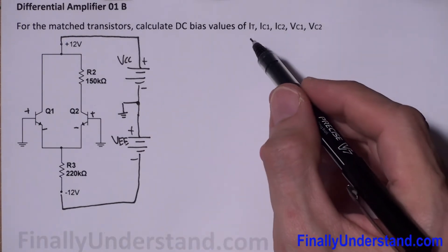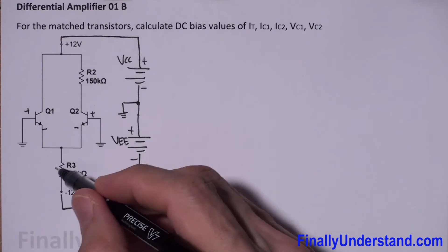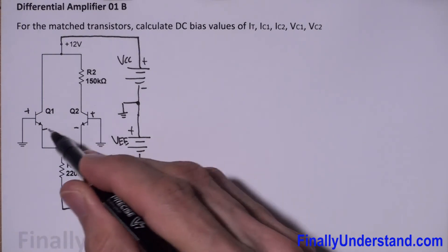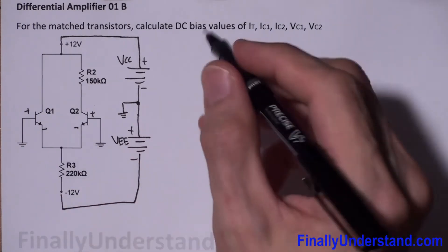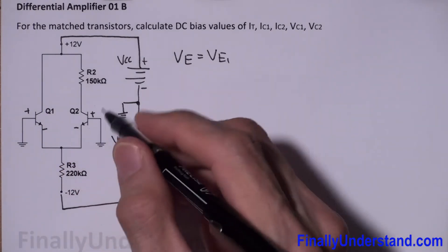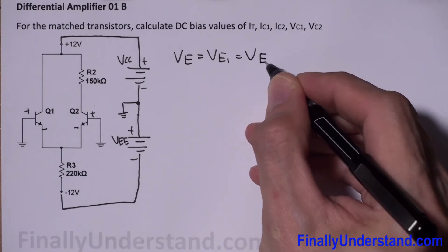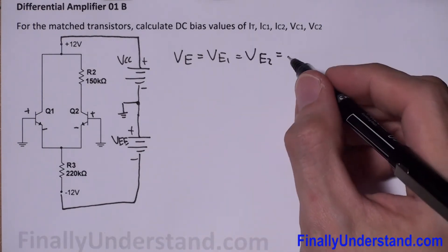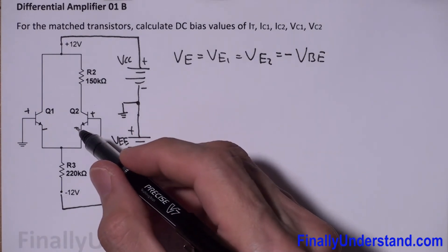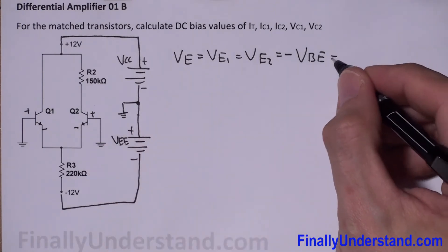In order to find I-tail, IC1, IC2, and the following voltages, we need to find the current through resistor R3. To find that current we need the voltage at this point, which is the voltage at the two emitters. So we write that VE equals VE1. The voltage across the emitter and ground is the same for both transistors, so using KVL we get VE2 equals negative VBE.